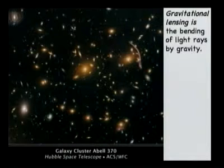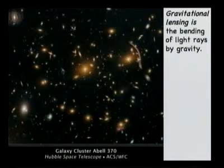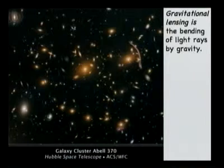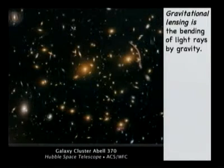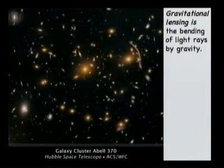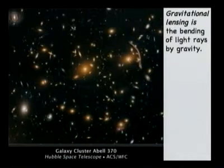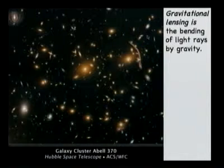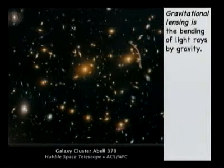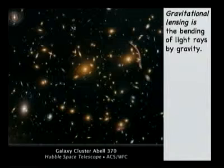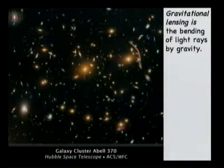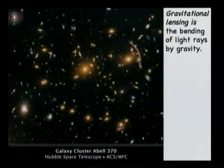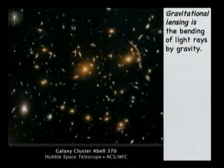If you notice those images here that look like arcs, there are no galaxies that really come in these shapes. These are actually galaxies that have had their shapes distorted by intervening mass between us, the observer, and this galaxy. So this galaxy is actually in the background of this big massive cluster of galaxies.